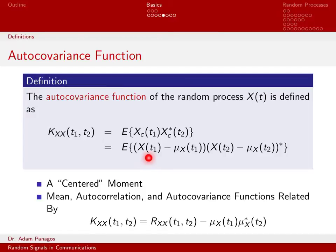This definition is very similar to the autocorrelation function. The only difference is I take off the mean at time t1 from the random variable at time t1, and take off the mean at time t2 from the random variable at time t2. So really what we have here is what's called a centered moment, and this is the definition of our autocovariance function.